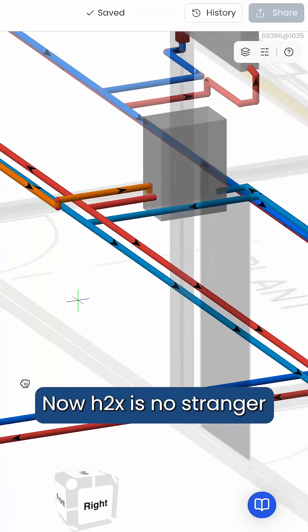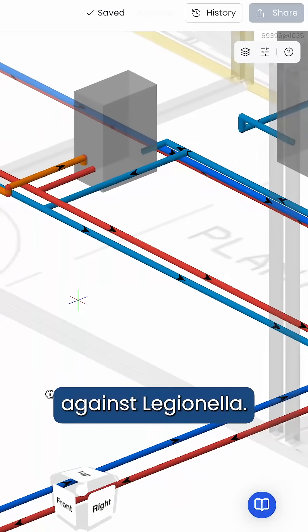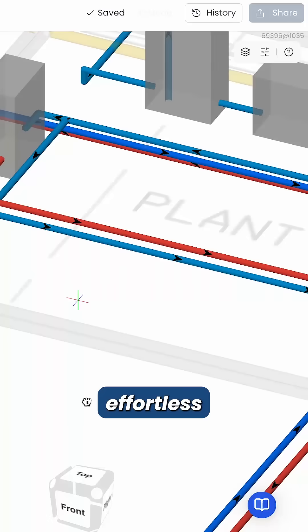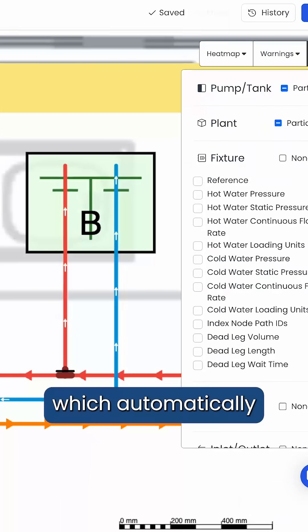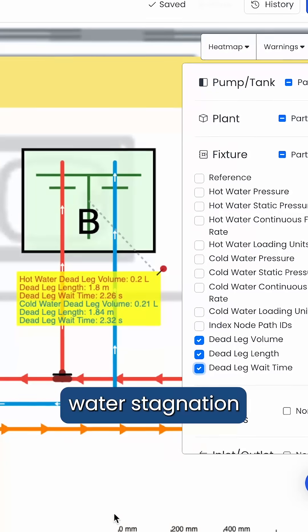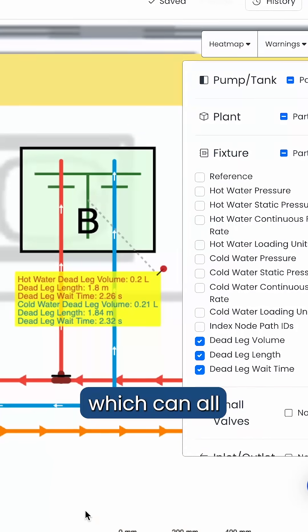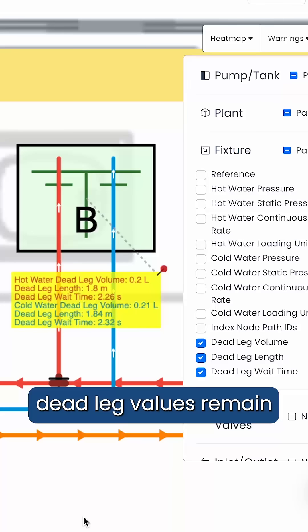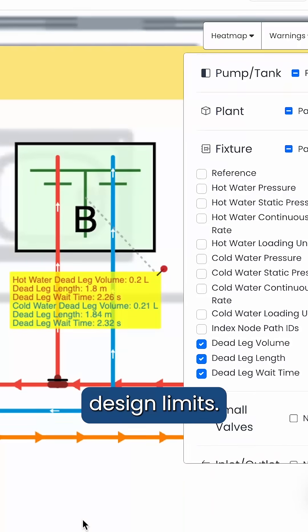Now H2X is no stranger to the fight against Legionella. Our software makes designing and sizing Legionella-resistant water systems effortless through calculations which automatically identify dead leg length, volume, and wait time to prevent water stagnation and minimize health risks, which can all be exported into schedules to ensure your dead leg values remain within acceptable design limits.